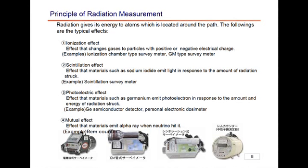On page 8, the principle of measurement for radiation is shown. Basically, when radiation comes into a detector, it reacts to the surrounding materials on the path of the radiation, and the detector detects the results of such reactions.